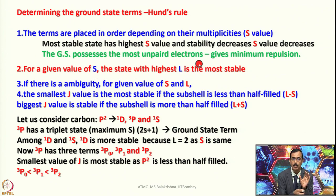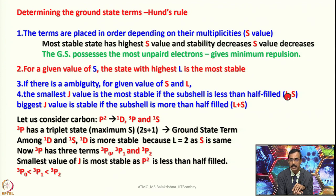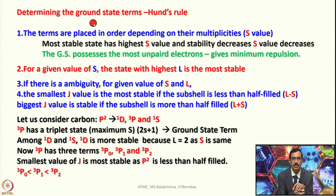Next, if multiplicities are the same, we look for the highest L value. If both S and L are the same for two or more states, we examine J: the smallest J value is most stable if the subshell is less than half-filled (J = L − S), and the largest J value is most stable if the subshell is more than half-filled (J = L + S). These are Hund's rules for determining the ground state term.